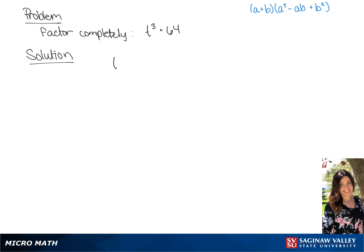We're factoring t cubed plus 64 by using the sum of cubes formula, which is written in the top right corner. If we take the cube root of both of these terms, we will get our a and b. So if we take the cube root of t to the third, we get t, which will be our a.